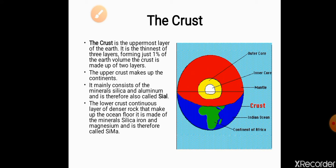The lower crust is a continuous layer of denser rock that makes up the ocean floor. Lower crust gehri chattanon se milkar bani hoti hai jo apas mein juri hone ke karan samudra ki satah yaani seabeds banati hai. It is made up of the minerals silica, iron, and magnesium — is mein paye jane wale khanij hain silica, iron, aur magnesium. That is why this layer is known as SIMA. Isi liye is layer ko SIMA ka naam diya gaya hai. SIMA is a combination of four alphabets: SI stands for silica and MA stands for magnesium.